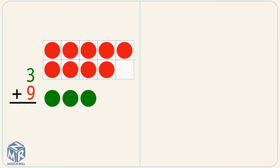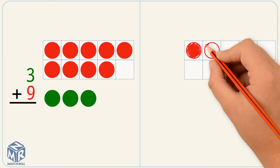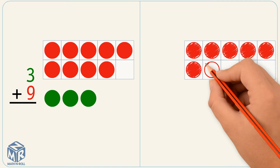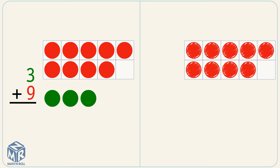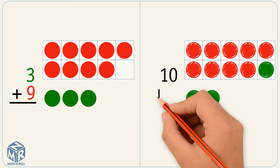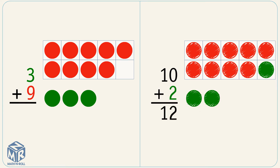Let's do another one. 3 plus 9. We have 9 red counters inside the 10 frame and 3 green counters outside the 10 frame. Let's make a 10 using another 10 frame. We start with a bigger number, 9. To make a 10, we need one more counter. So we add a green counter and we have 2 green counters outside the 10 frame. 10 plus 2 equals 12. So 3 plus 9 equals 12.